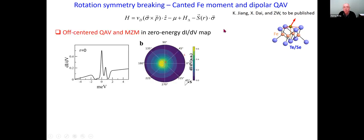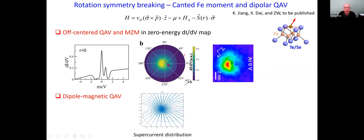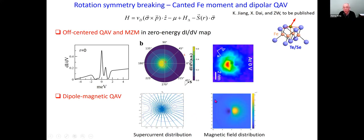Let me explain why the Majorana zero mode can be off-center: the magnetic moment of the impurity spin could be canted away from the surface normal, breaking rotation symmetry. A direct consequence is that the quantum anomalous vortex-antivortex in general can have a dipole structure — the magnetic field distribution in the z-direction is not monopolar but dipolar, pointing up on one side and down on the other.